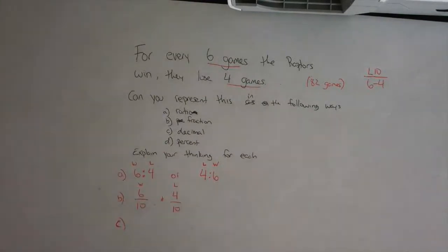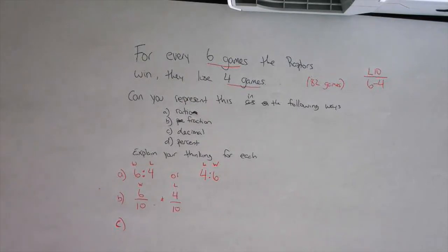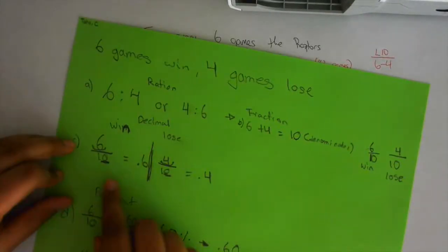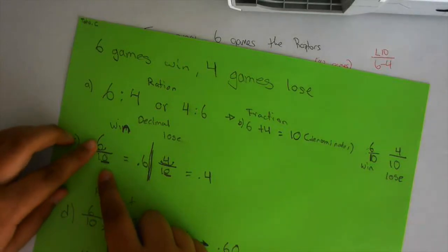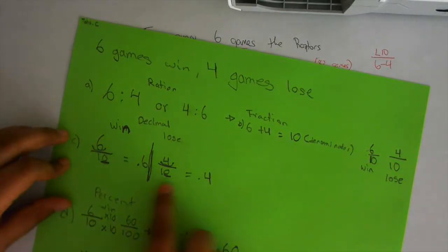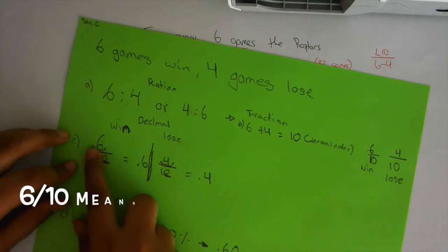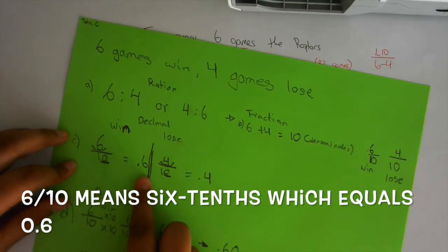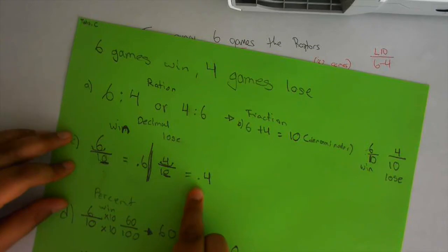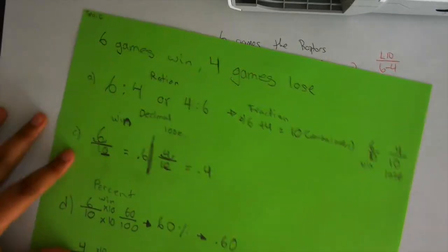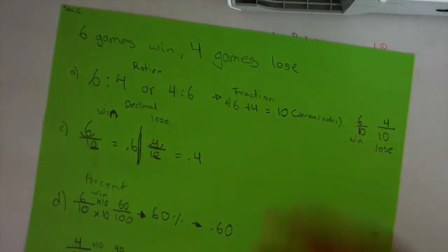Let's look at decimal. Who came up with a decimal method they'd like to share? What we did is we got the fraction six over ten and four over ten. There's one zero, so we shifted the decimal one point and we got point six, and for the other one we did the same thing—we got point four.